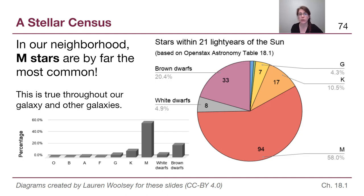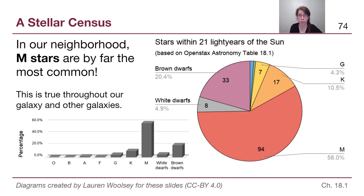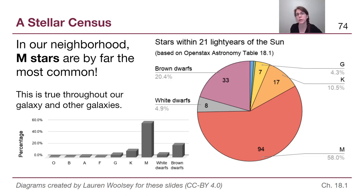No matter where we are, M stars are by and away the most common type of star throughout our entire galaxy — true in other galaxies as well. M stars are the most common here, almost 60% of what's around us. There are also a great number of brown dwarfs. Brown dwarfs are not stars — they never had enough mass to begin with. And so those are even more dim and hard to find than M stars, and it's likely that they might even be undercounted out of the 20% of what we found.